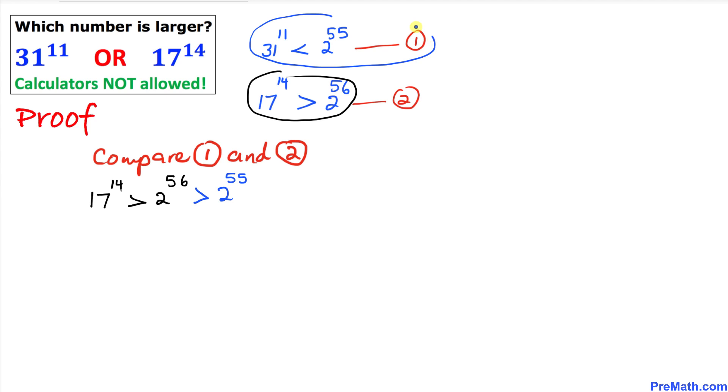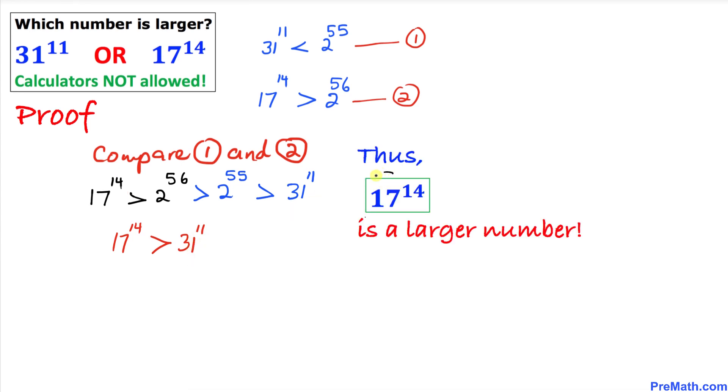And from inequality number 1, 2^55 is larger than 31^11. So therefore, by using the transitive property, we conclude that 17^14 is larger than 31^11. Thus 17^14 is the larger number.